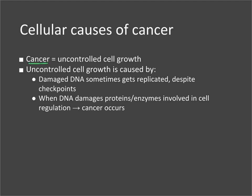During DNA replication, some proofreading happens. During checkpoints, the cell is supposed to make sure that DNA was replicated properly and chromosomes are formatted correctly. But sometimes mistakes still get through. This is especially a problem when DNA damages the proteins or enzymes involved in cell regulation — specifically tumor suppressor genes and proto-oncogenes.